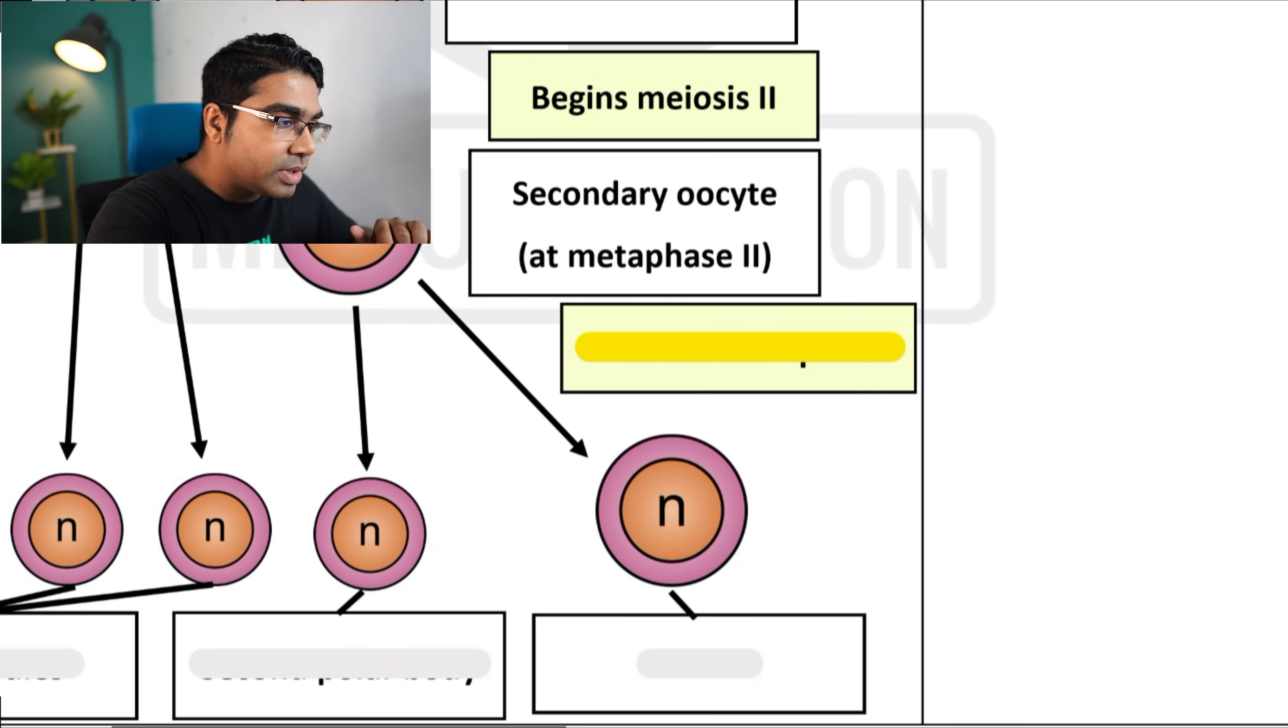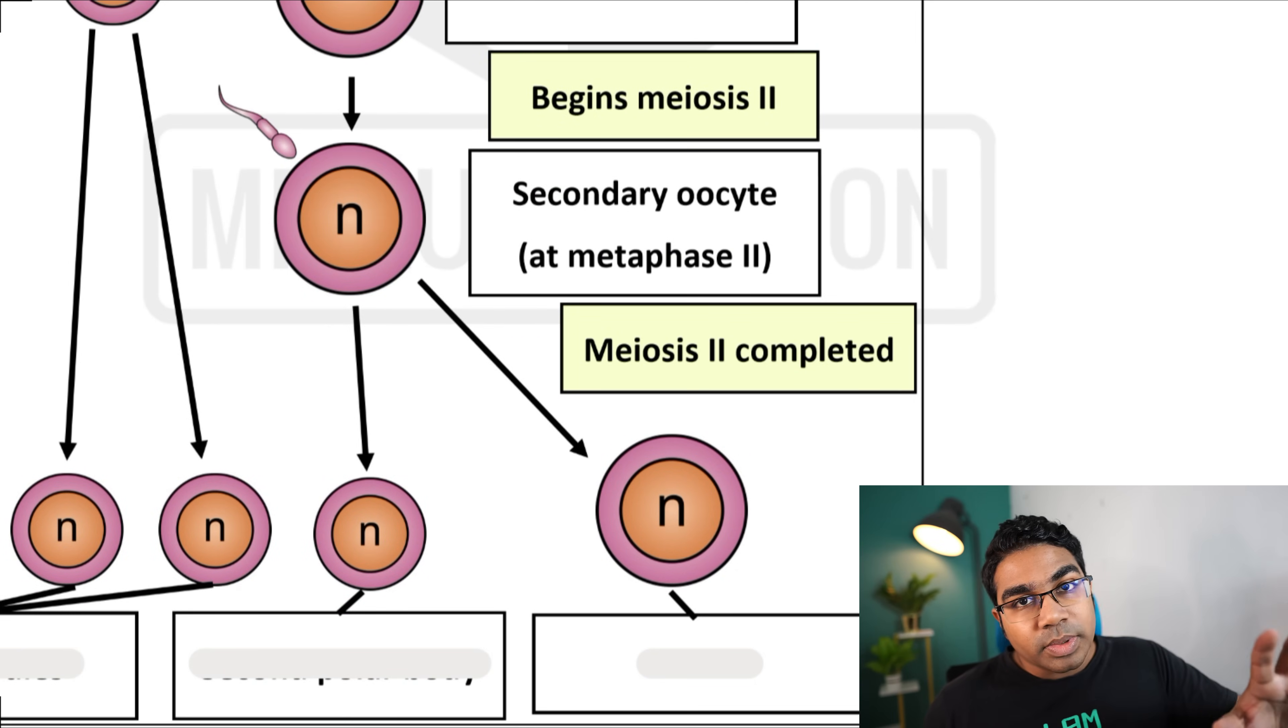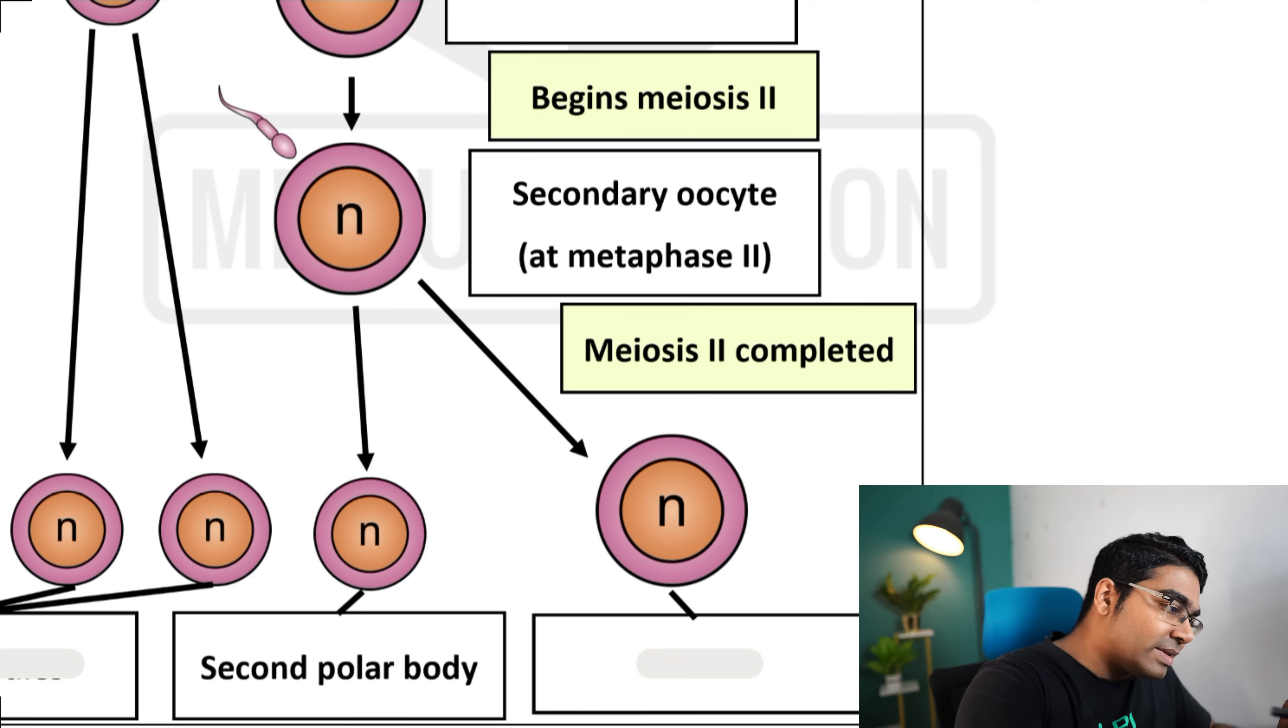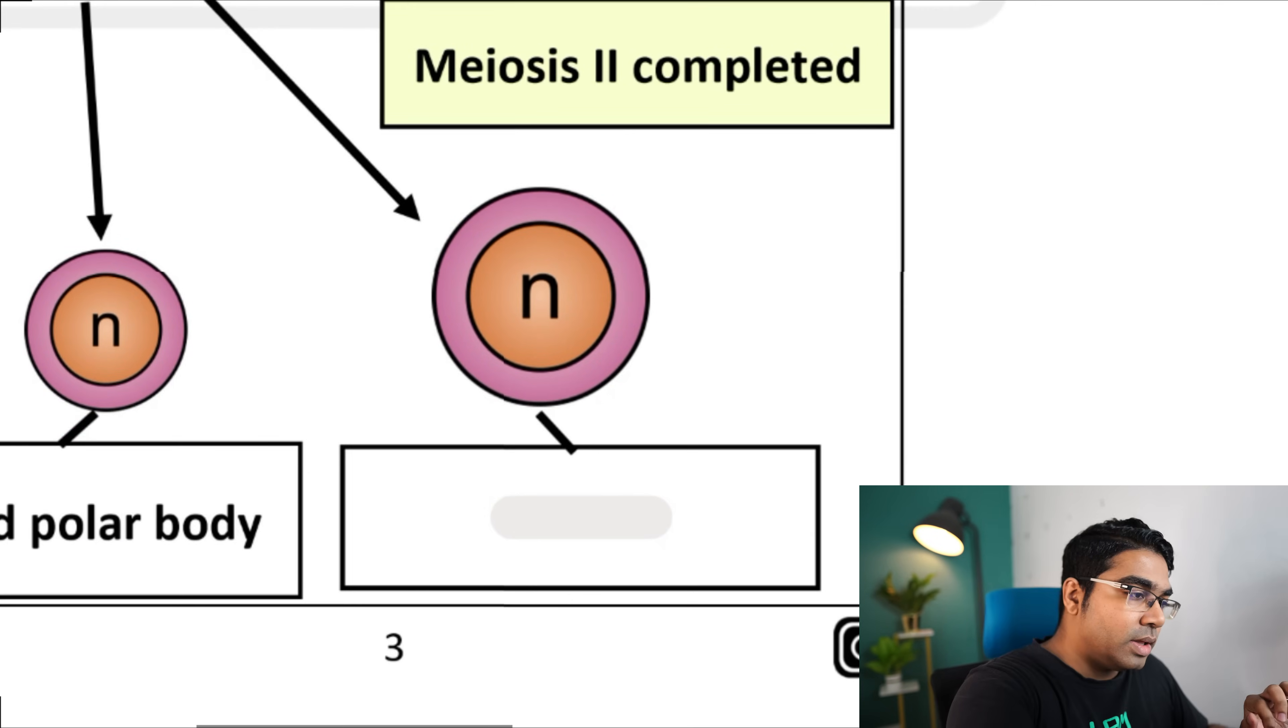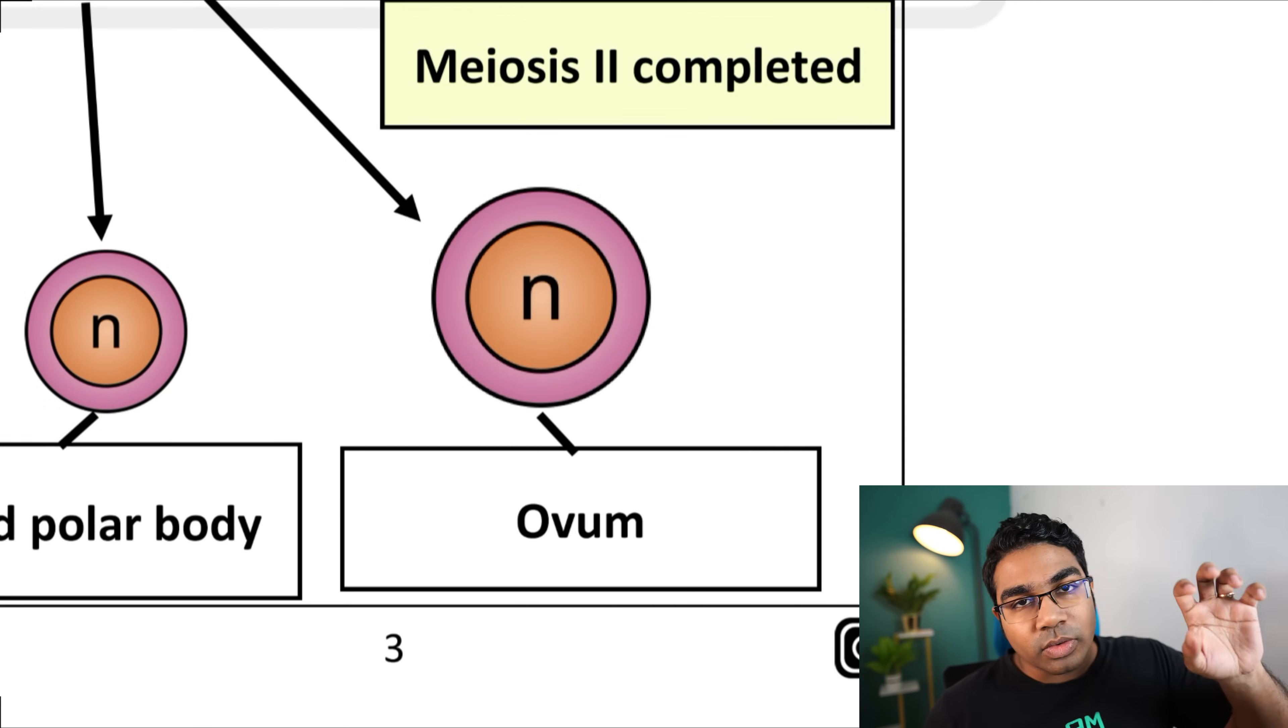Then, meiosis 2 is going to be completed. And when meiosis 2 is completed, the secondary oocyte will then become, once again, you will see cells of two different sizes. One smaller cell and one larger cell. The smaller cell is known as the second polar body. Whereas the larger cell, this cell, is what we call the ovum. Finally, the ovum is produced.